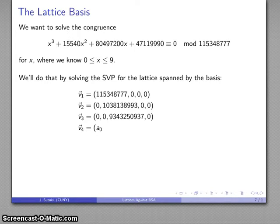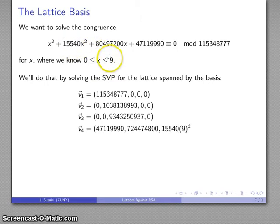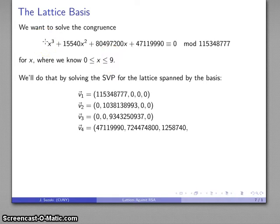Our last vector is going to be the coefficients of our polynomial multiplied by the appropriate power of our maximum value. So I have my constant term, my linear term times the maximum, my square term times the square of the maximum, and then my cubic term, cubic coefficient times the cube of the maximum value.